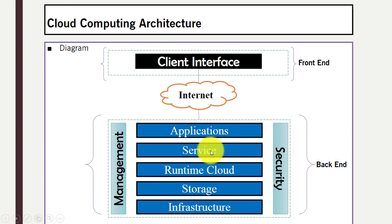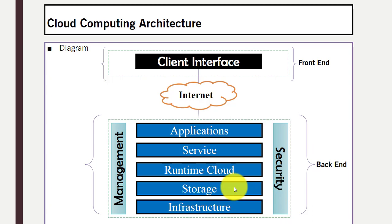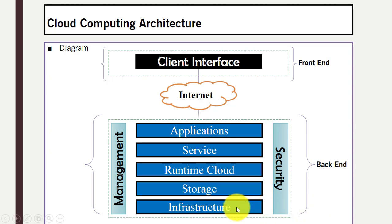Then we have different types of services like infrastructure, software, and platform. Then we have runtime cloud. Then we have different storage services provided to the end users on the cloud — different storage devices where users can store their data. Then we have infrastructure; since everything is virtual on the internet and provided on the cloud, the infrastructure covers both hardware and software requirements.